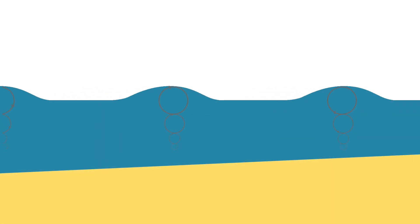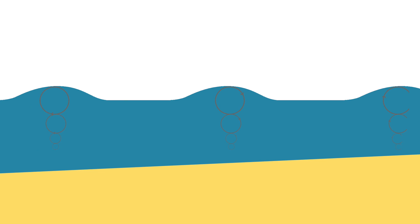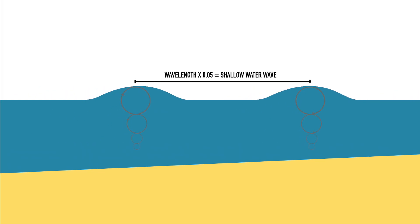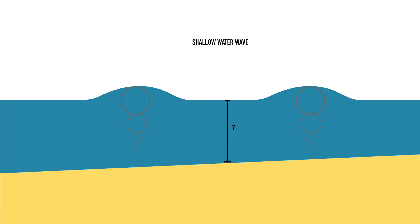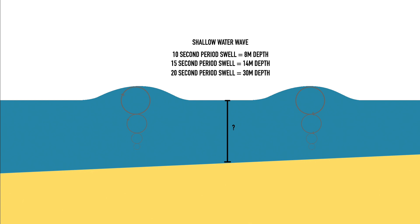The transition to a true shallow water wave is complete at a depth equal to one twentieth of the wavelength. This means that a 10-second period wave will become a shallow water wave in 8 meters of depth, a 15-second period wave in 14 meters of depth, and a 20-second period wave in 30 meters of depth.